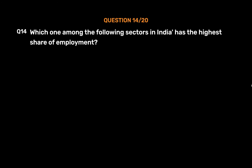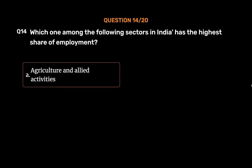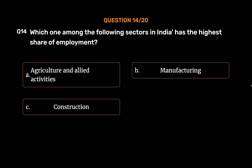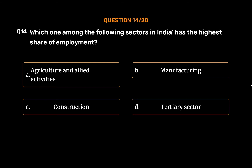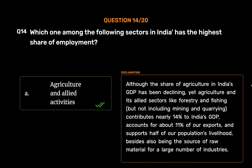Question No. 14: Which one among the following sectors in India has the highest share of employment? Option A, Agriculture and Allied Activities; Option B, Manufacturing; Option C, Construction; Option D, Tertiary Sector. The correct answer is Option A, Agriculture and Allied Activities. Although the share of agriculture in India's GDP has been declining, agriculture and its allied sectors contribute nearly 14% to India's GDP, account for about 11% of exports, and support half of the population's livelihood, besides being the source of raw material for a large number of industries.